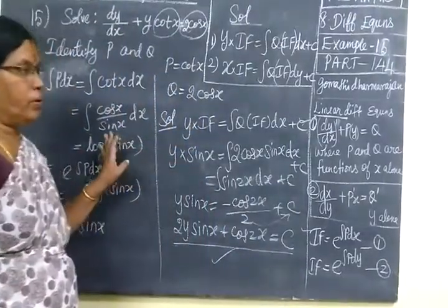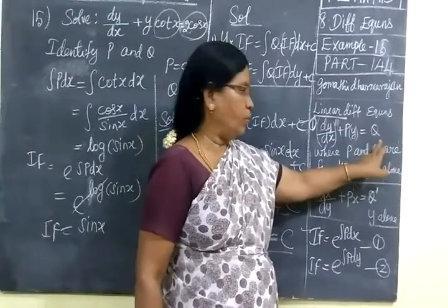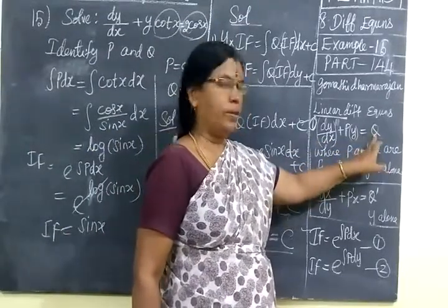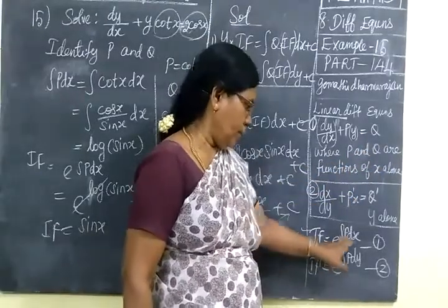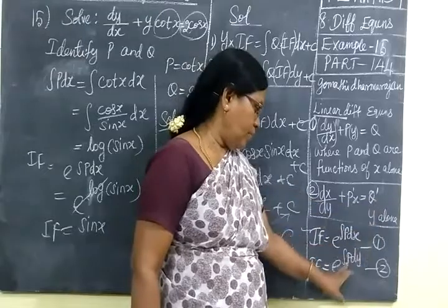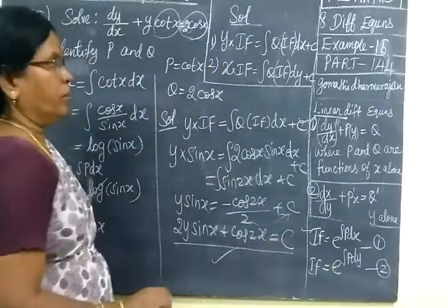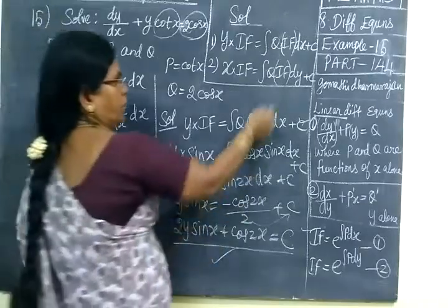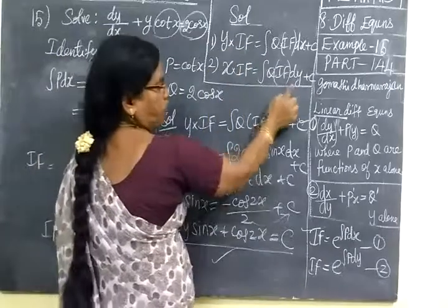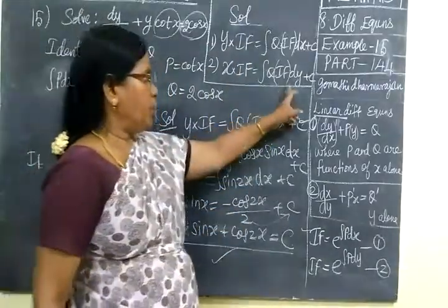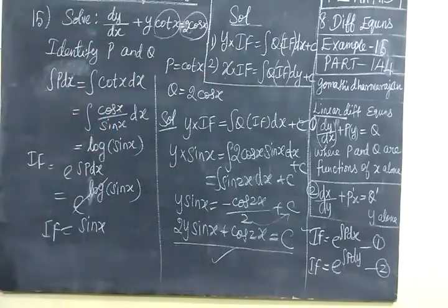So for this problem, first you identify the linear equation and identify P and Q. See whether they are functions of x — if so, use the first rule with e to the power of integral P dx. If functions of y, use e to the power of integral P dy. Then find the solution: with respect to x write dx, with respect to y write dy. Then the problem will be easy.